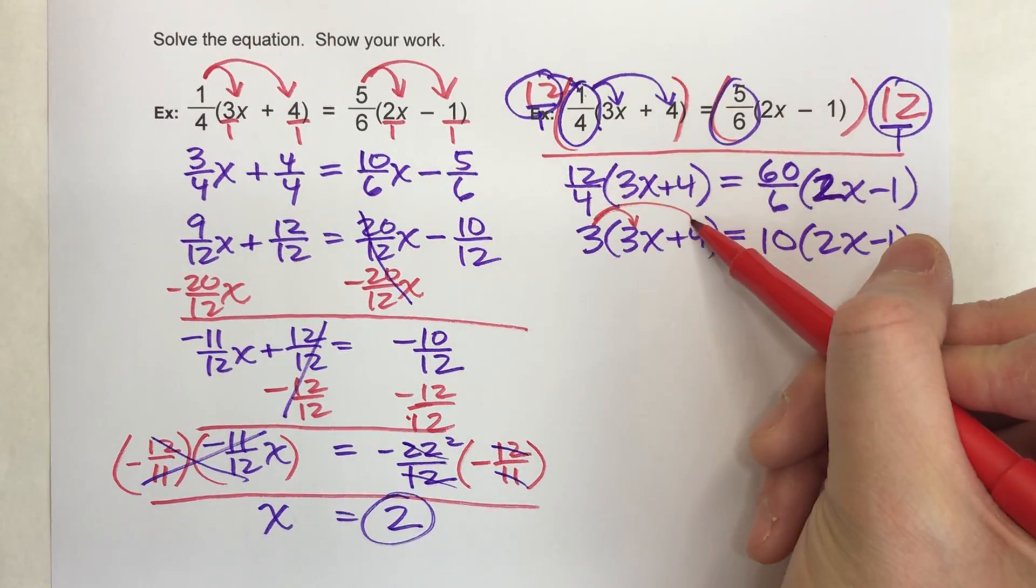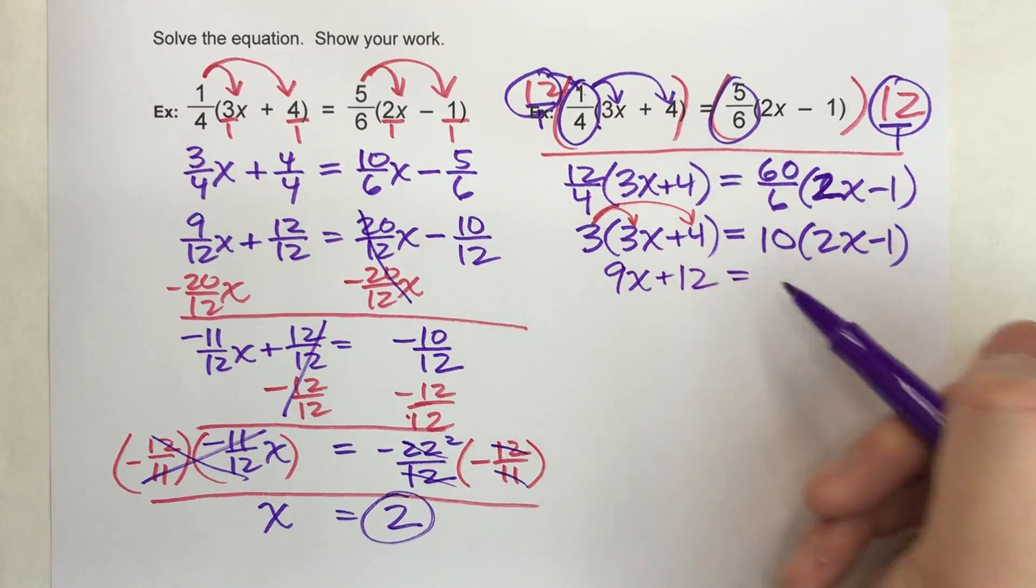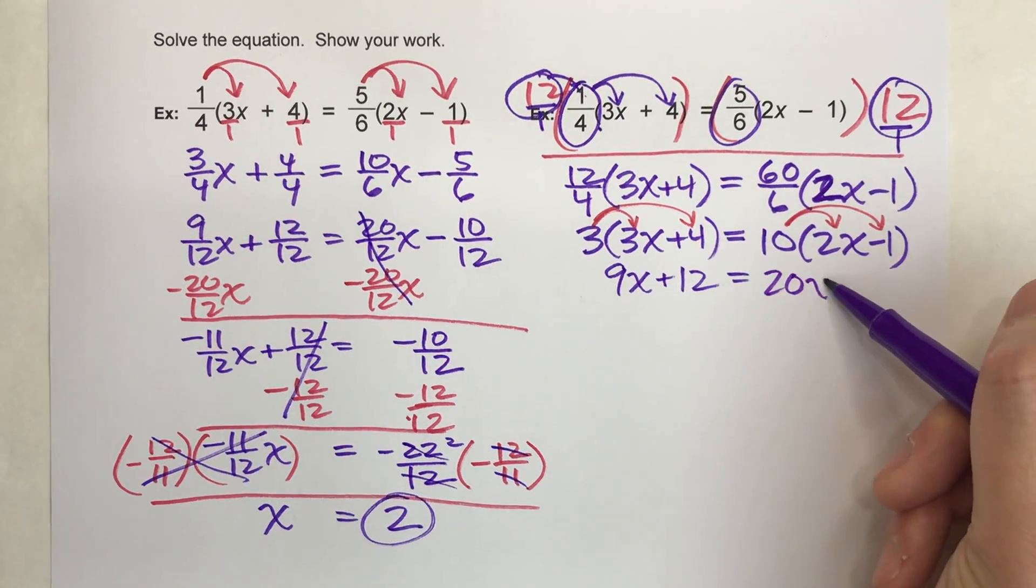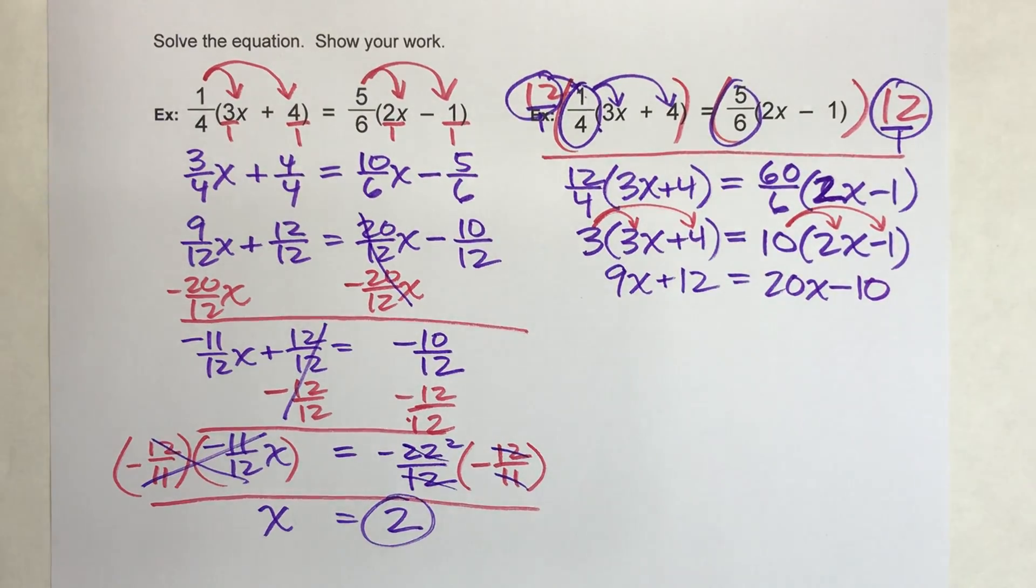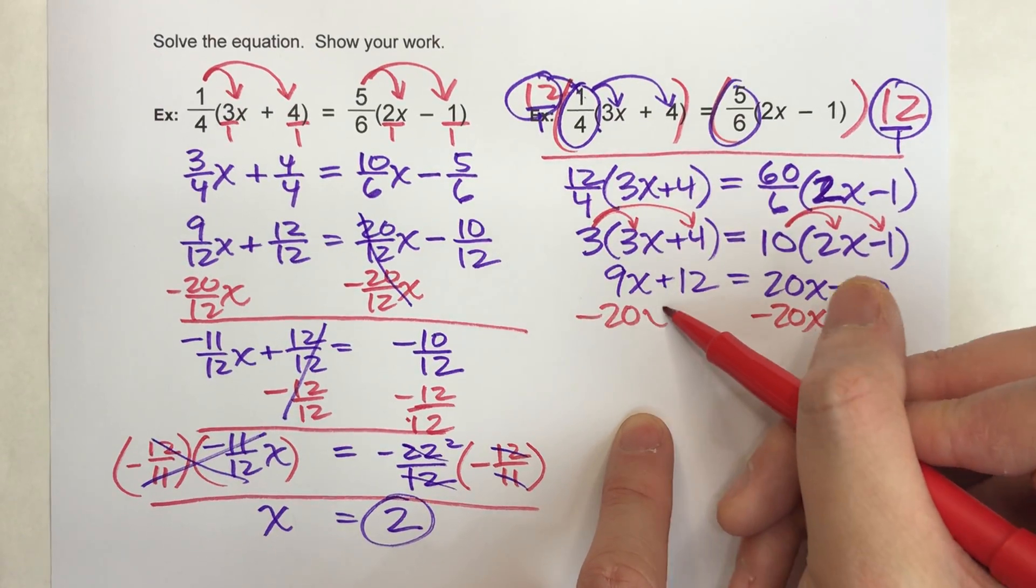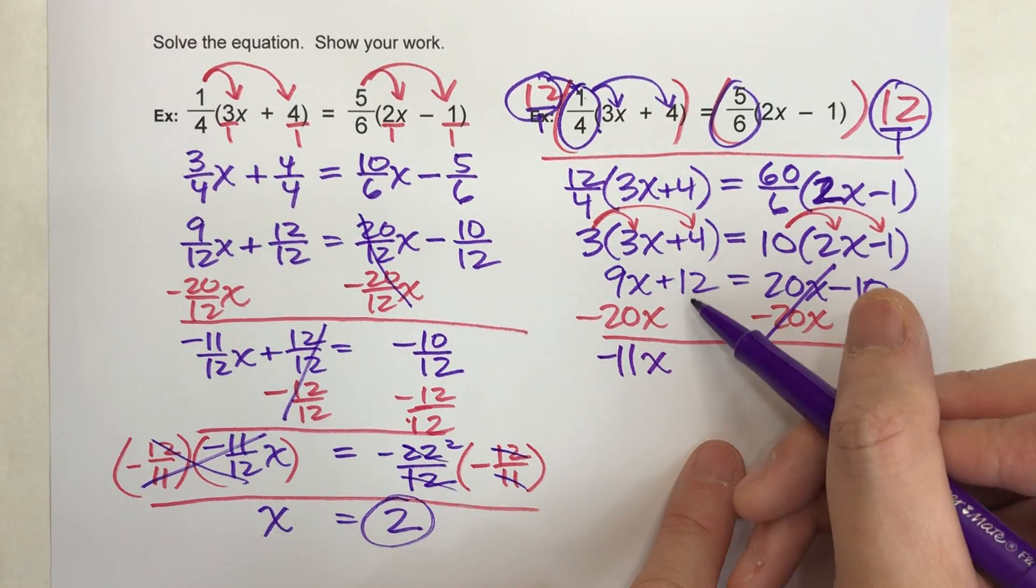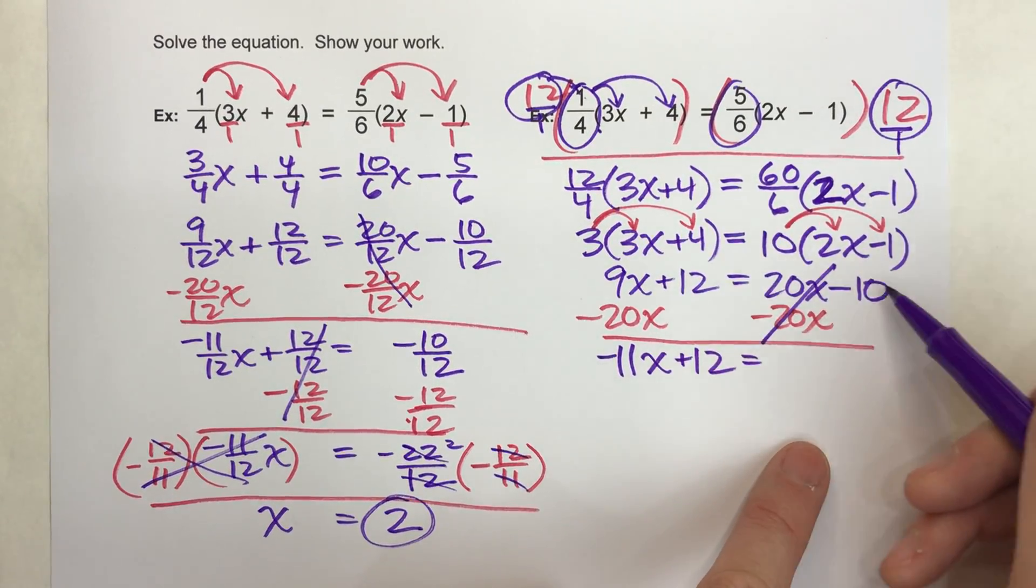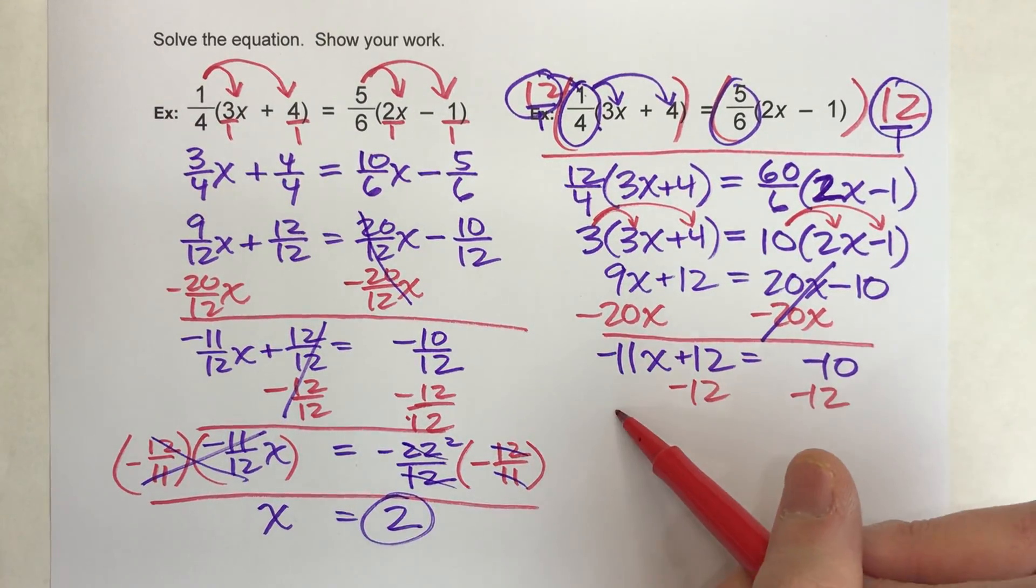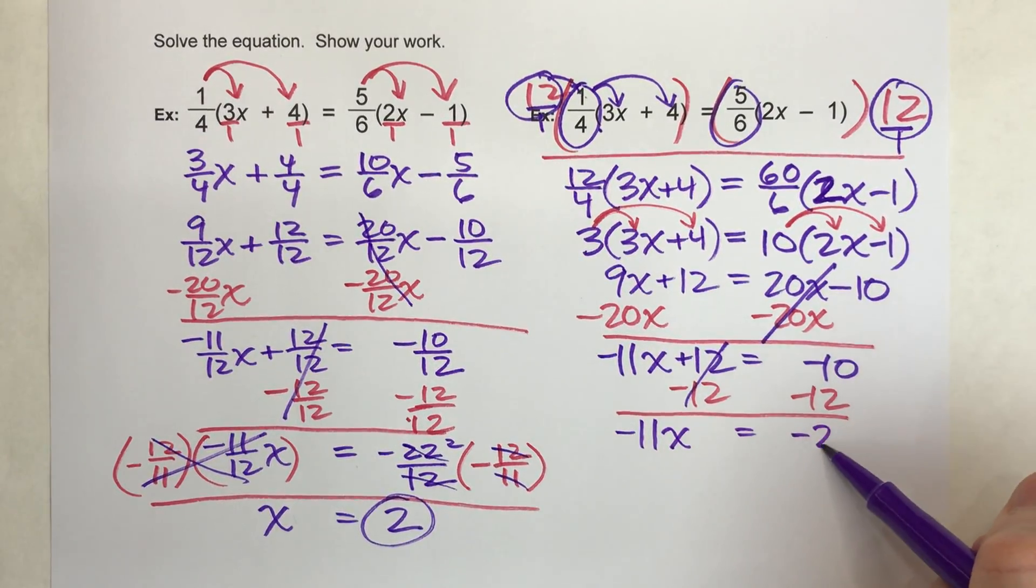Alright, so now let's just go through and solve this. Distributive property: 3 times 3x is 9x, 3 times 4 is 12. On the other side, distribute that 10: 10 times 2x is 20x, 10 times -1 is -10. Now I've got x's on both sides. I'm going to subtract off all the x's off one side. When I do that, these undo each other. I've got -11x plus 12 is equal to, and over here, just -10 is left. Subtract 12 from both sides. I end up getting -11x equals -22.